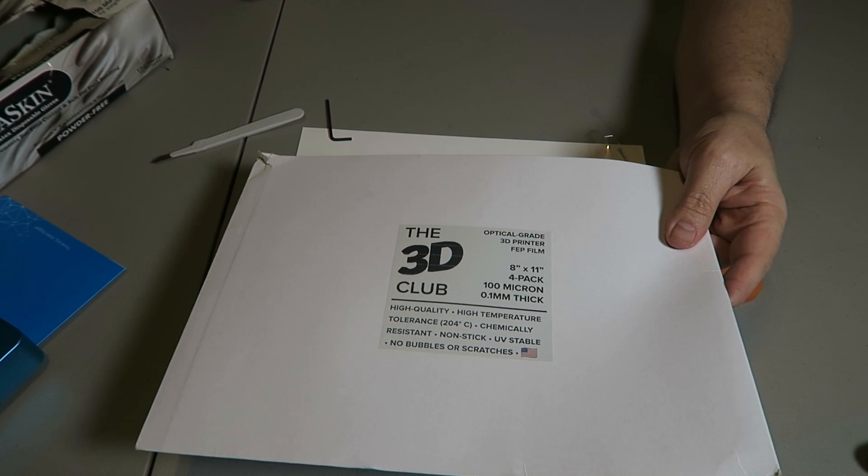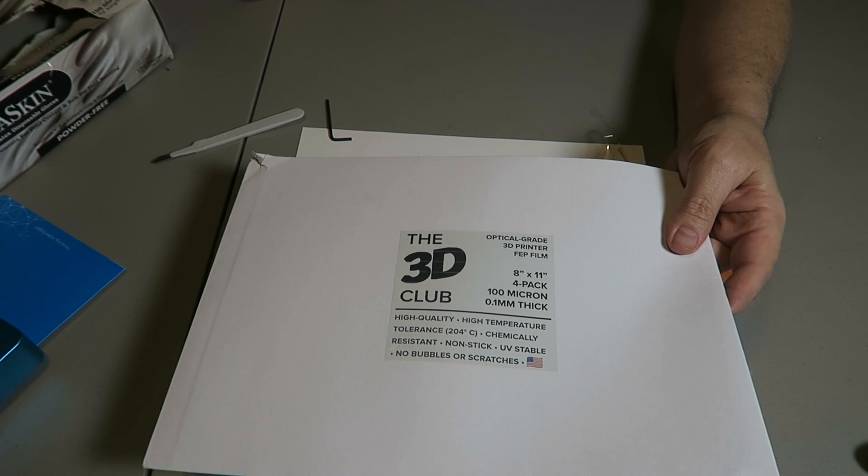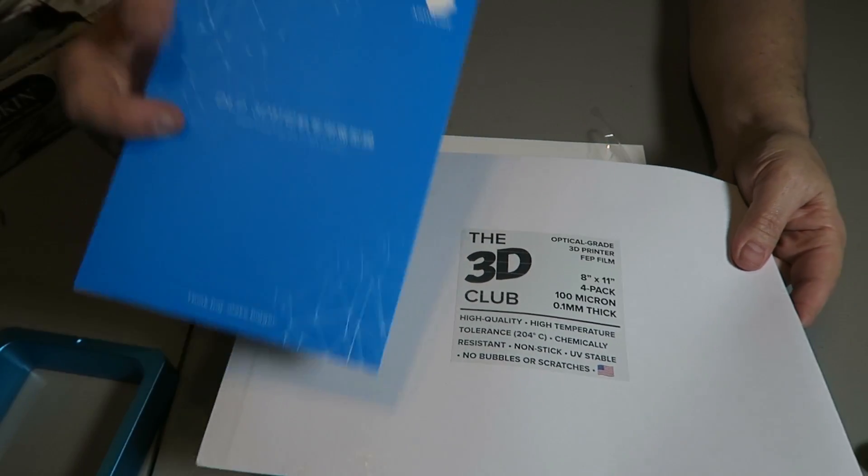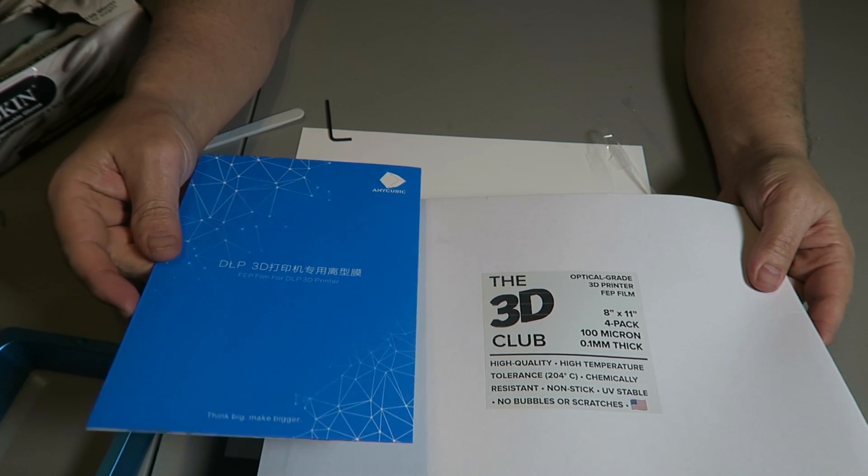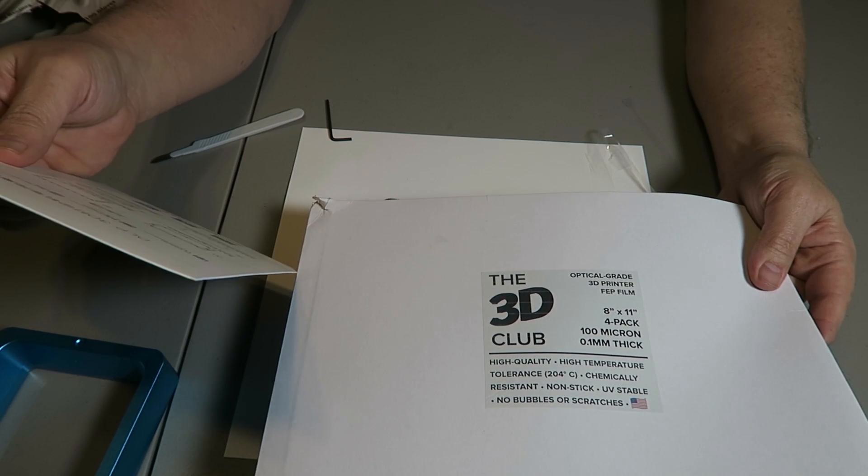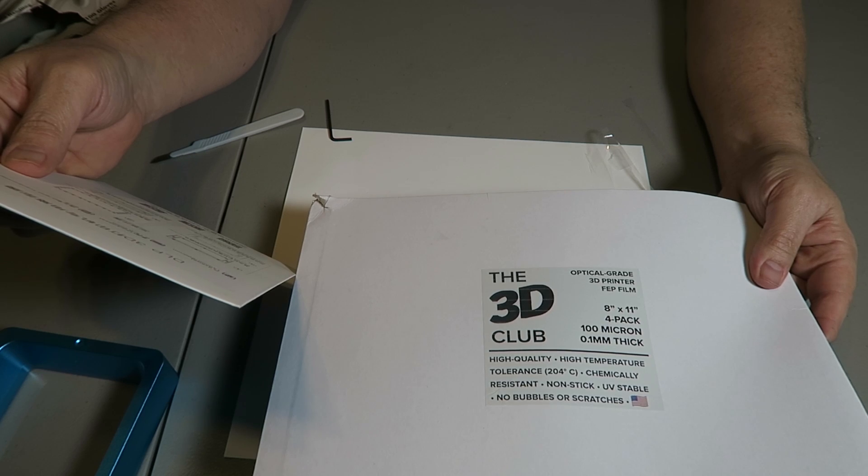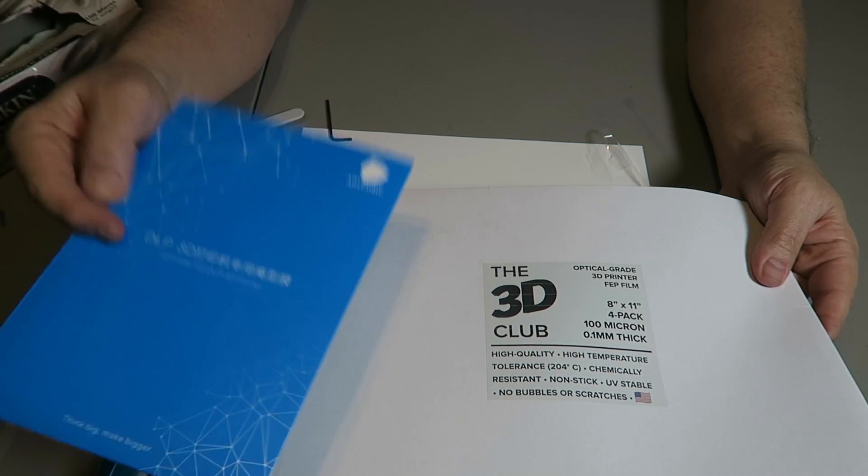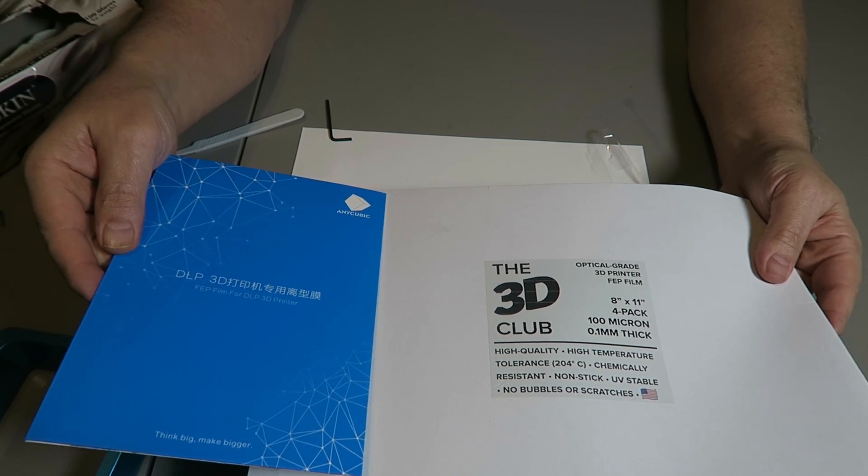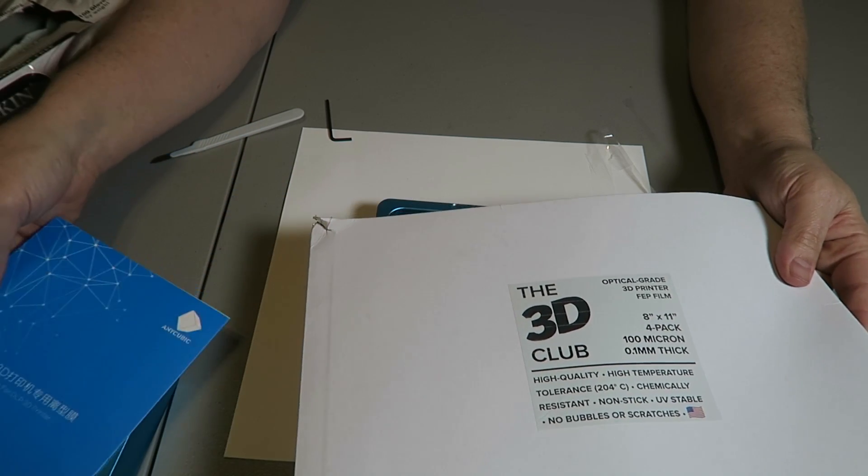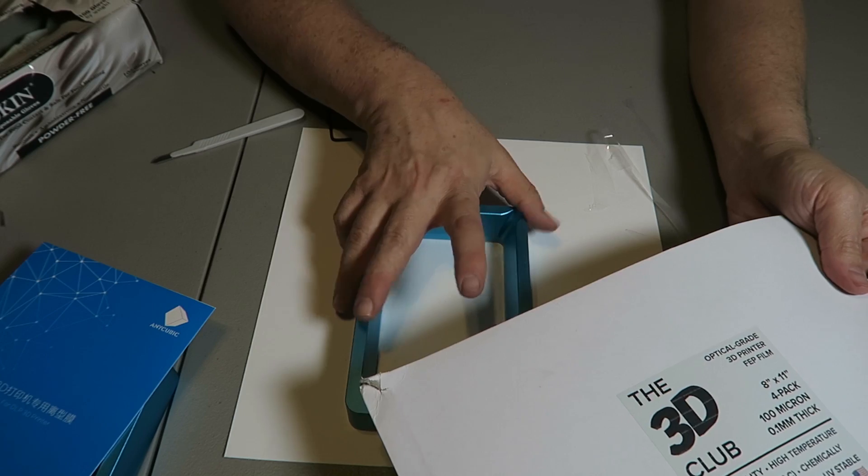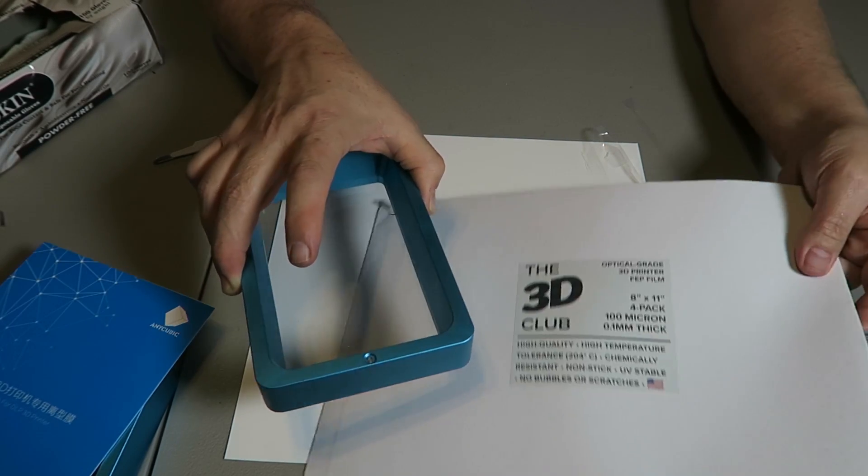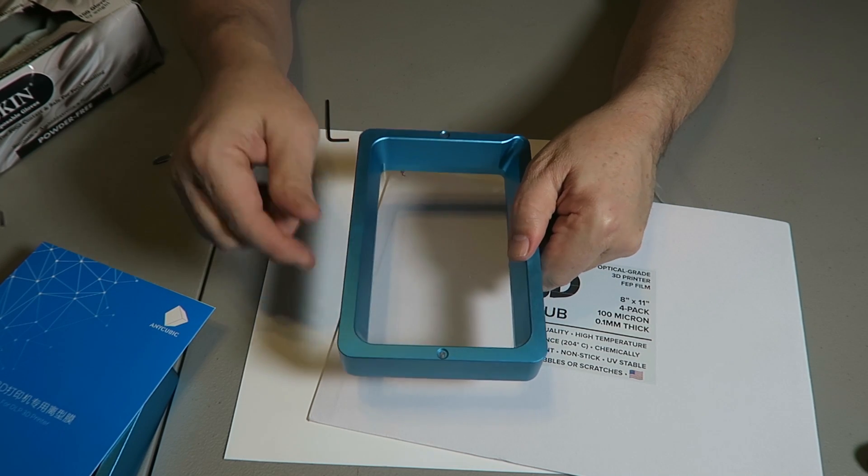I've heard that the 100 micron, again, it is a little bit thinner than your standard Anycubic. I believe the Anycubic is listed at .15 to .2 millimeters. So it's going to be a little bit thicker. I have read that you get better clarity with the thinner FEP. But again, you have to be really careful with it, especially when you're cleaning prints.